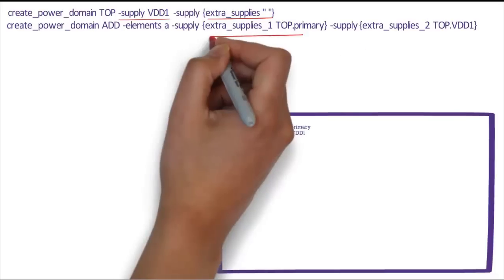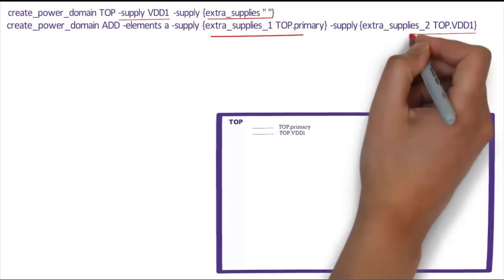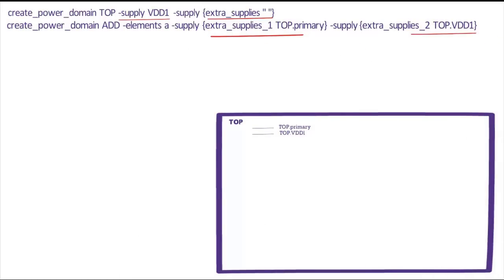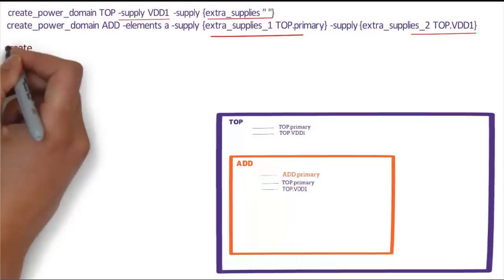Then we create Power Domain Add with Extra Supply's Top.Primary and Top.VDD1. This will create Power Domain Add with Add.Primary, Top.Primary, and Top.VDD1.